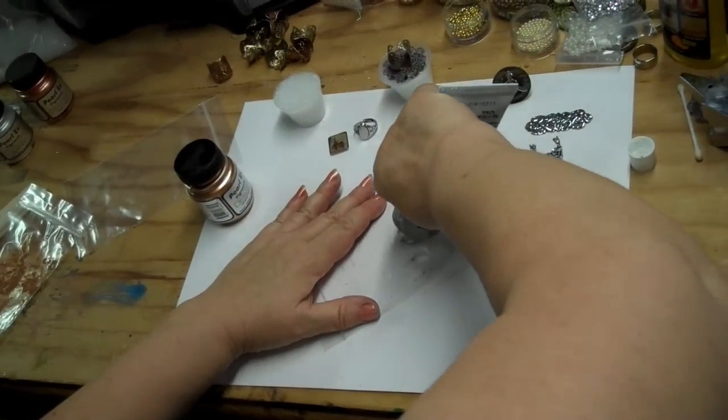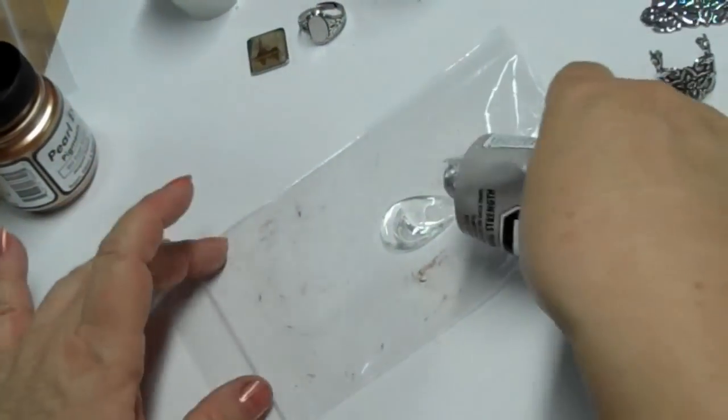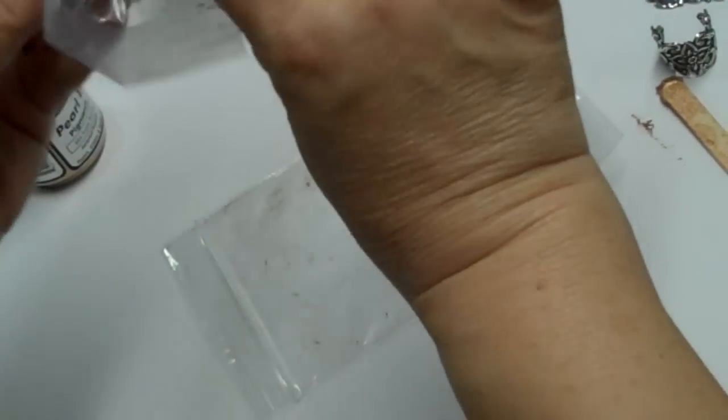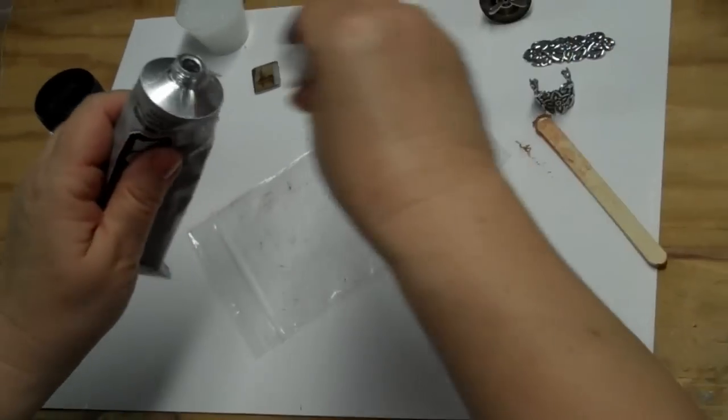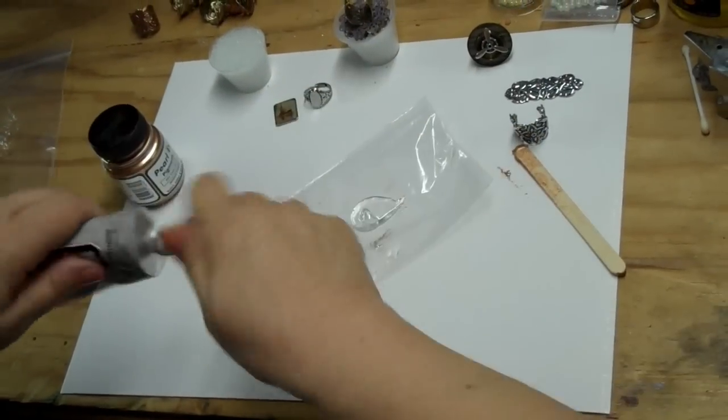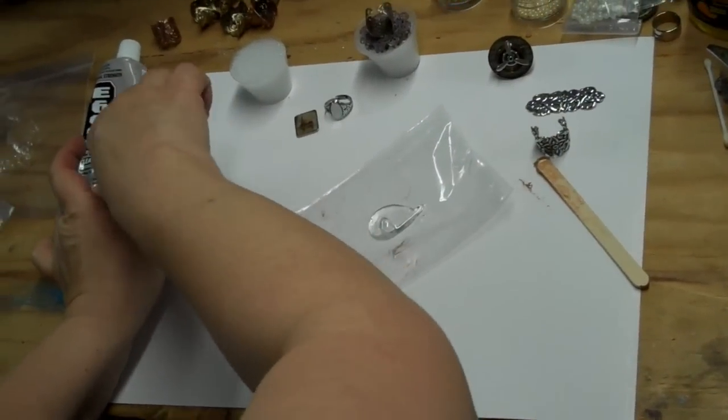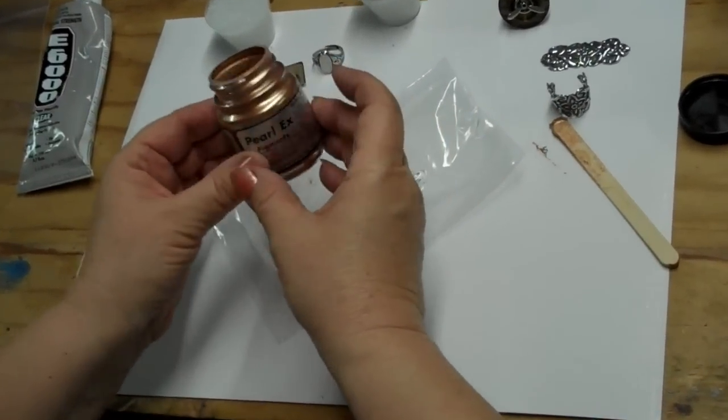Okay. So I'm just going to take some E6000 out of here and make a blob. And once again, as always, use care and caution when using E6000. It is a toxic substance. And so you don't want to be breathing this in and messing with it more than you have to. But unfortunately, you want to get a good bond, you've got to use it.